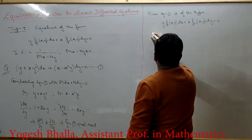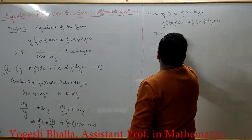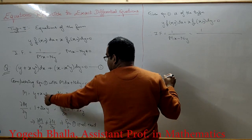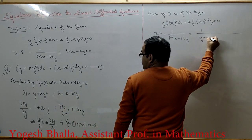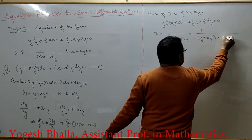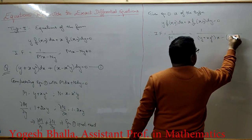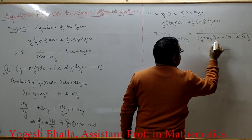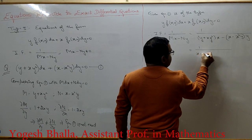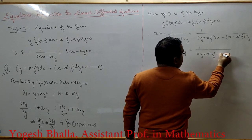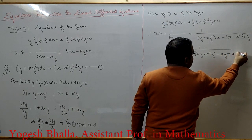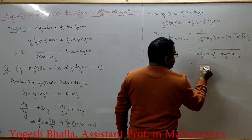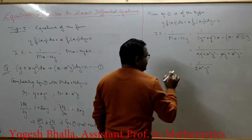Therefore the integrating factor is 1/(mx − ny). Here M = y + xy² and N = x − x²y, so mx − ny = (y + xy²)·x − (x − x²y)·y = xy + x²y² − xy + x²y² = 2x²y². Thus the integrating factor is 1/(2x²y²)... wait, simplifying gives 1/(x²y²) times the cancellation — after cancellation we get 1/(x²y²·(x−y))... actually mx − ny = 2x²y², so the integrating factor is 1/(2x²y²).